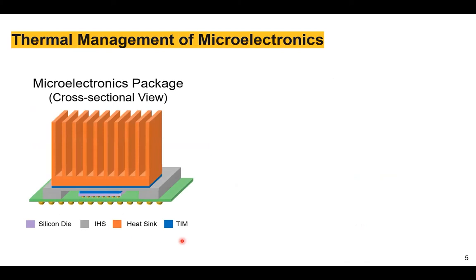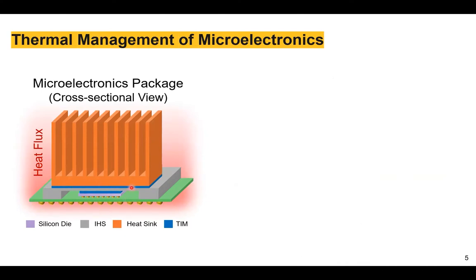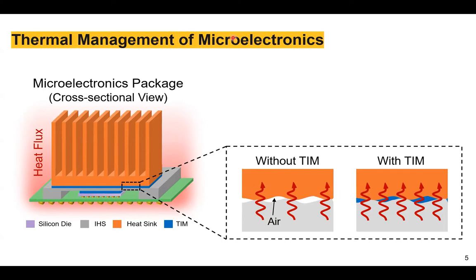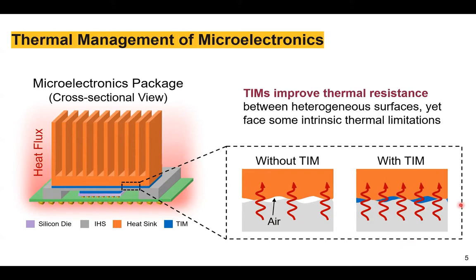To give an example of how this functions, let's look at a typical cross-sectional view of a microelectronics package. Key elements include the main heat-generating source — the silicon die — with heat removed through the integrated heat spreader and the heat sink. The TIM goes in between these two interfaces. Even seemingly flat and parallel surfaces have inherent microscopic roughness, which can lead to imperfect contacts, limit heat flow, and trap air — a poor thermal conductor. The TIM's function is to conform to these rough interfaces, enable improved heat transfer, and remove air pockets, thereby improving thermal resistance across heterogeneous surfaces.